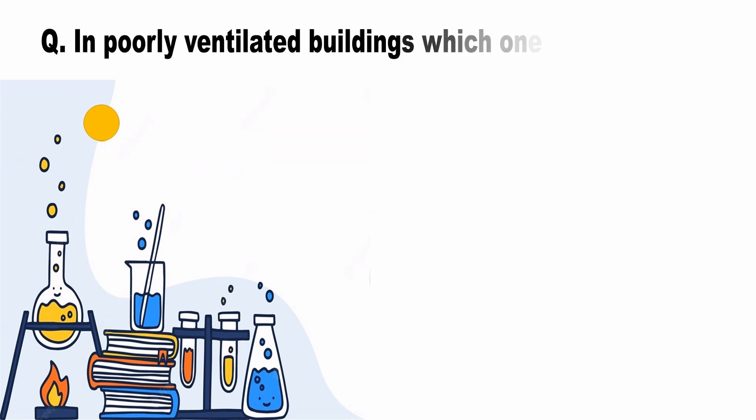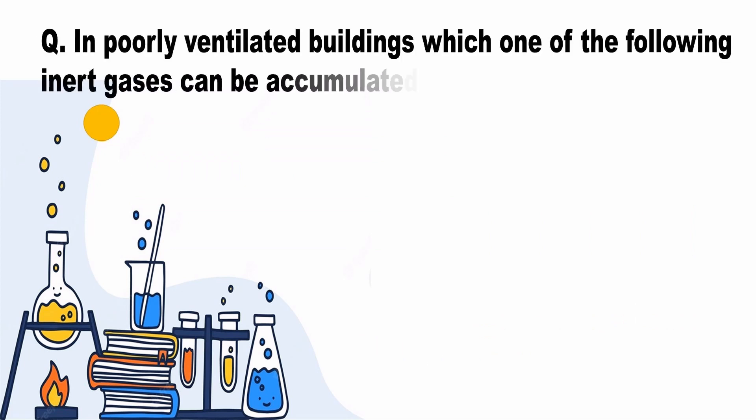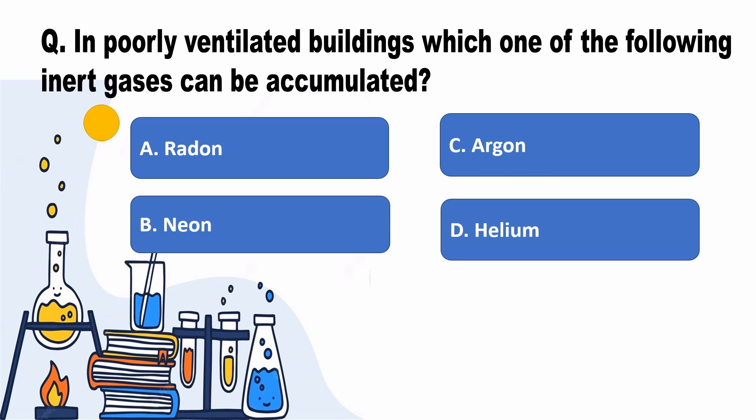In poorly ventilated buildings, which one of the following inert gases can be accumulated? Answer A, Radon.